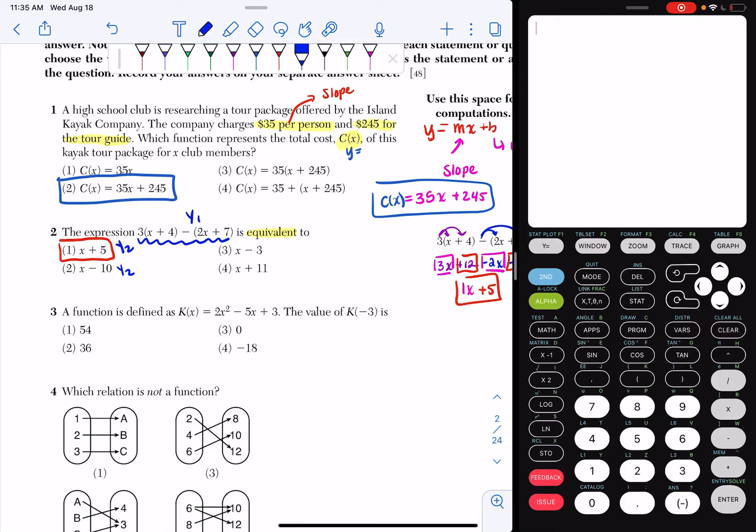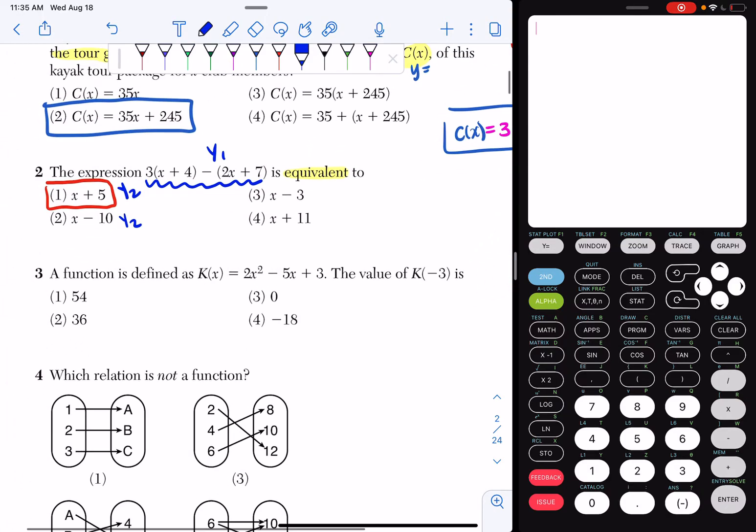Okay, June 2021, question number three. A function is defined as K of x equals 2x squared minus 5x plus 3. The value of K of negative 3 is...